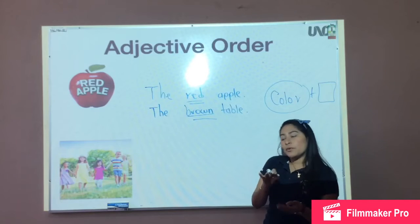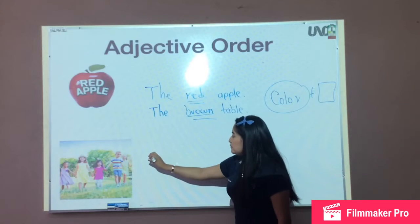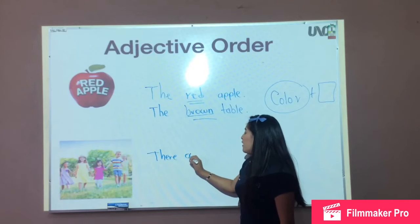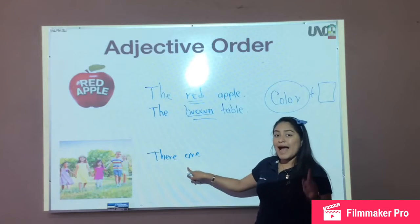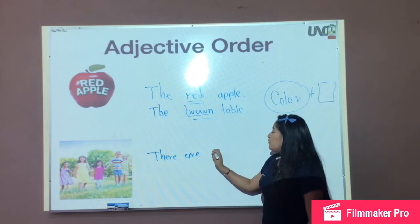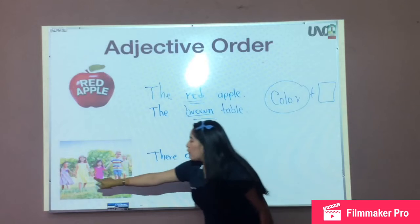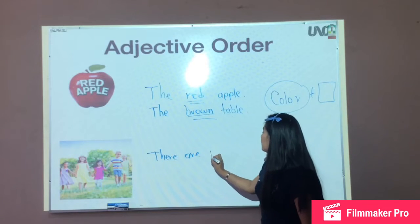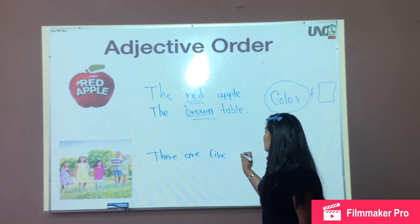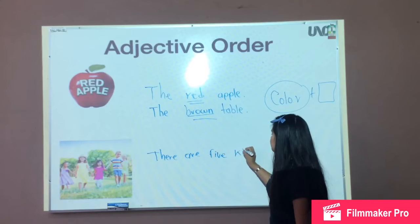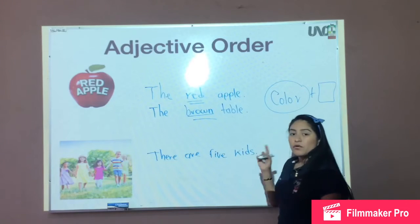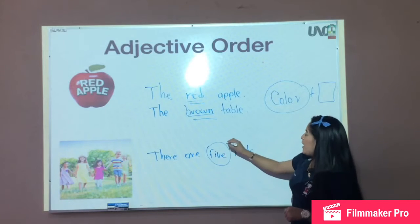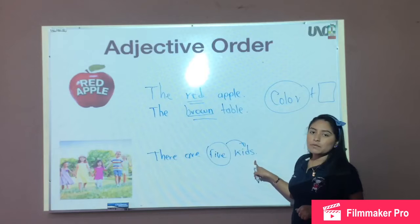Adjective order with numbers. There are — remember, there are five. One, two, three, four, five. Five kids. First, we are going to write five — the number — and then the object.